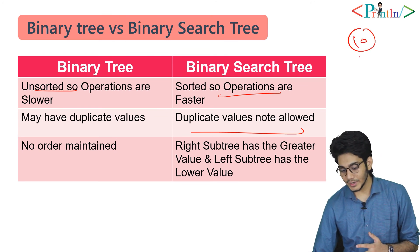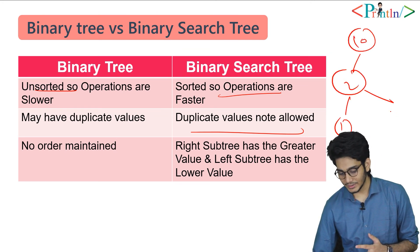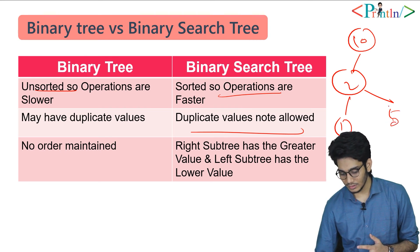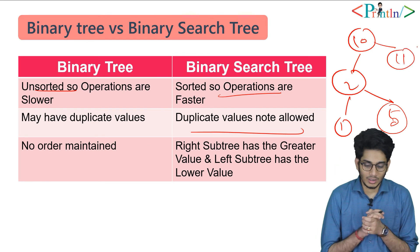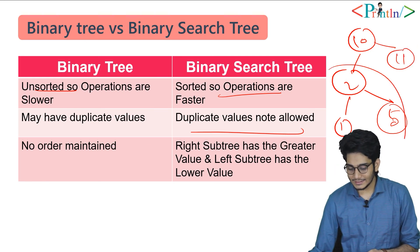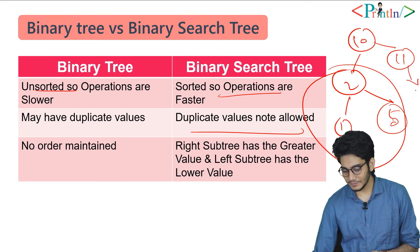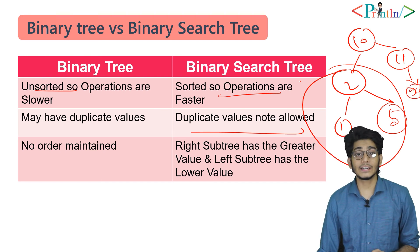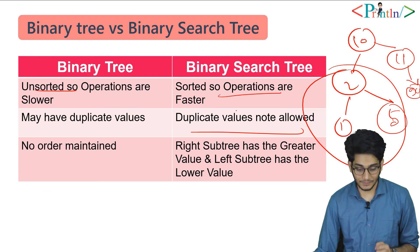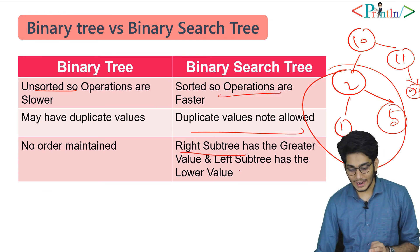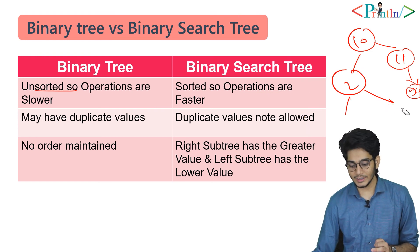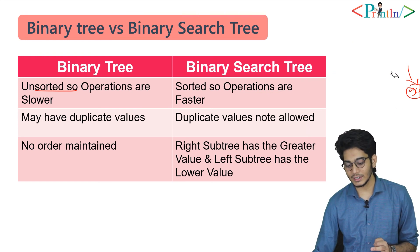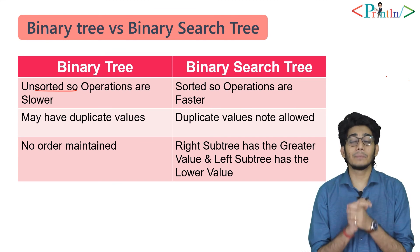In a binary tree we don't maintain any order, but in a BST every subtree has to be a BST itself — the right subtree has greater values and the left subtree has lower values. So in a binary search tree we are always maintaining a sorted order. These are the key differences between binary tree and binary search tree.